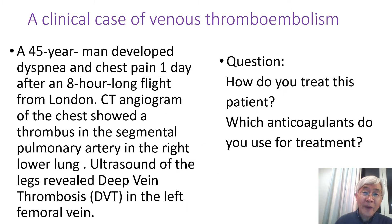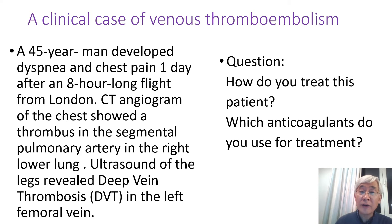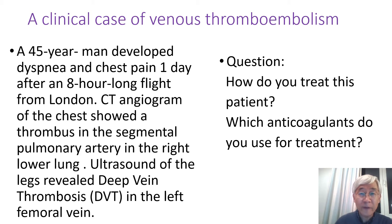A 45-year-old man developed dyspneic chest pain the day after a long flight from London. CT angiogram of the chest showed a thrombus in the segmental pulmonary artery in the right lower lung. Ultrasound of the leg revealed deep vein thrombosis in the left femoral vein. How do you treat this patient?